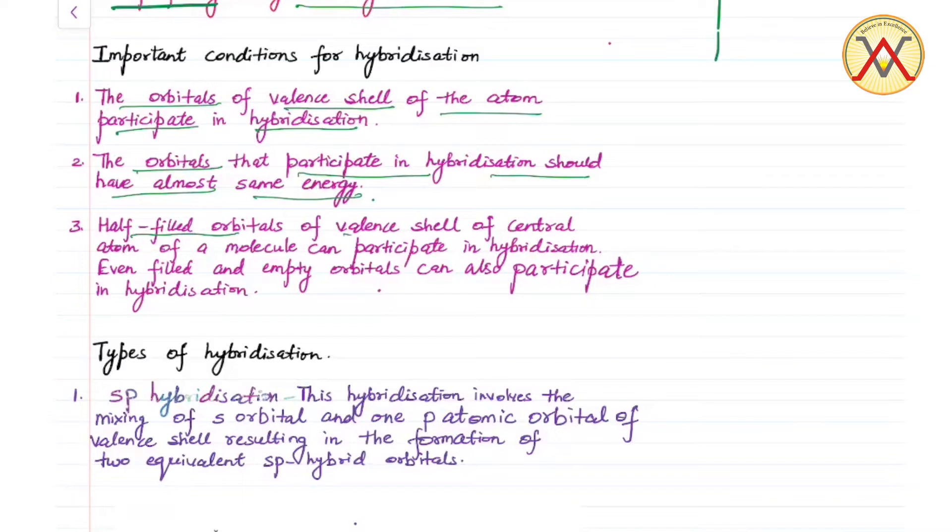Half-filled orbitals of valence shell of central atom of a molecule can participate in hybridization. Even filled and empty orbitals can also participate in hybridization.